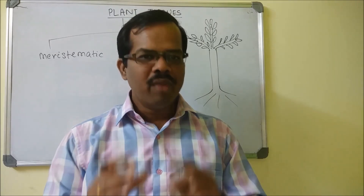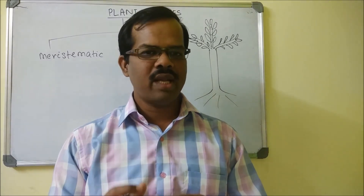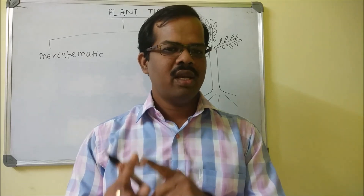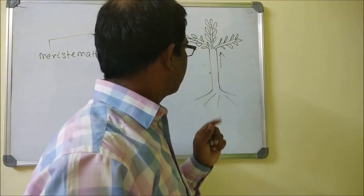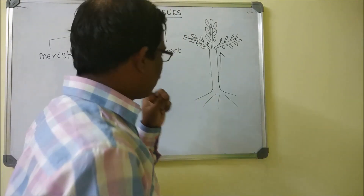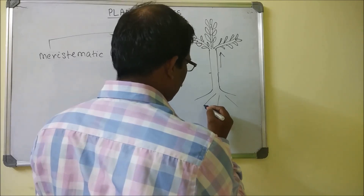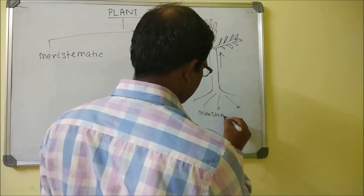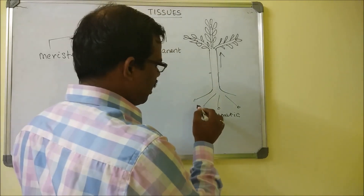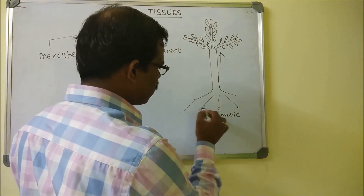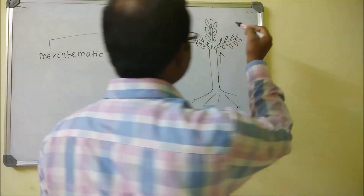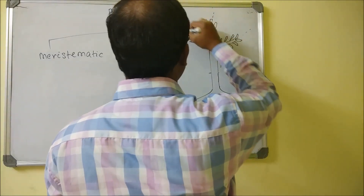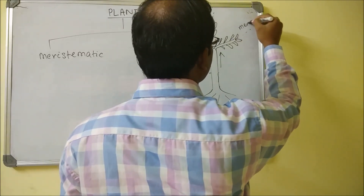Meristematic tissues are comprised of cells that are actively dividing. These meristematic cells are found in the stems and roots because they have to grow. As shown in the diagram, meristematic tissues are present at the tips of the roots and the tips of the stem, because the length of the plant has to keep increasing.